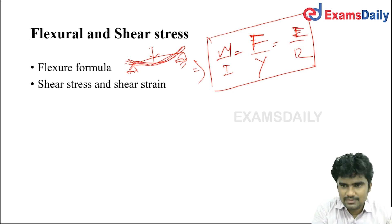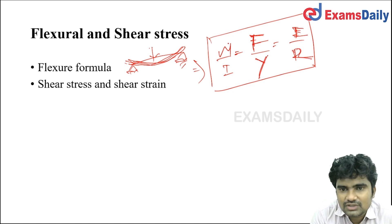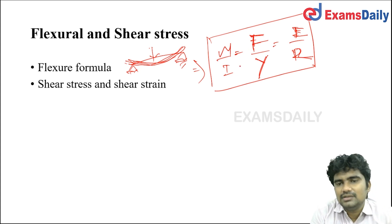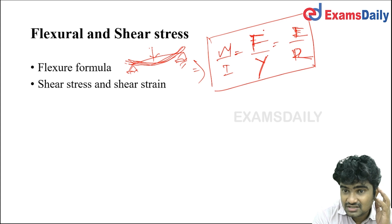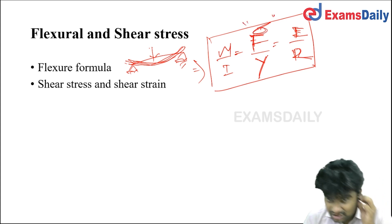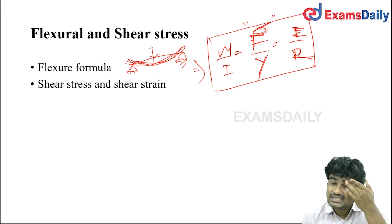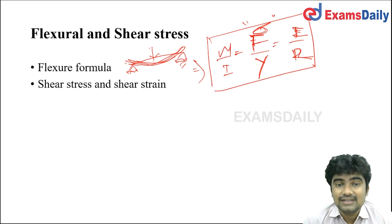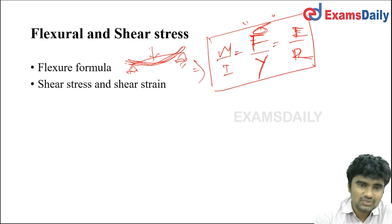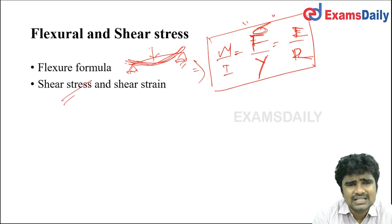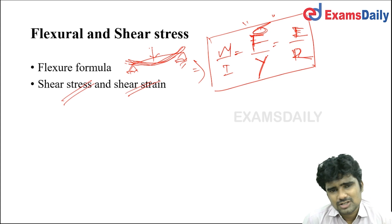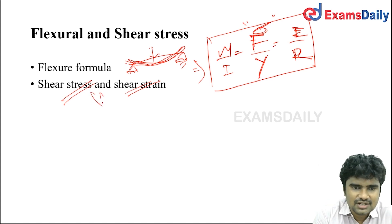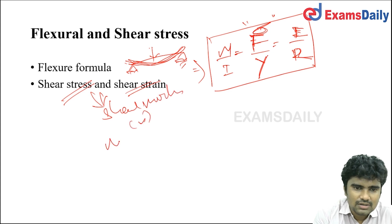Shear stress divided by shear strain gives the modulus of rigidity. The ratio of shear stress to shear strain is the shear modulus, also known as the modulus of rigidity. Based on this bending equation, we can determine any parameter related to the flexural behavior of a member, as well as shear stress and shear strain.